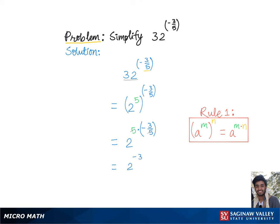Now we'll change this negative exponent into positive using the rule of negative exponents, according to which we'll get 1 over 2 to the third power, which is equal to 1 over 8, the final answer.